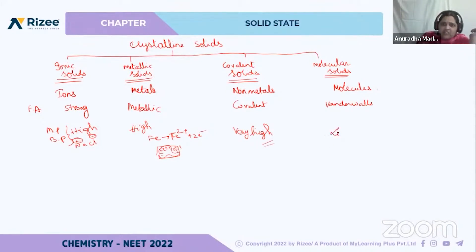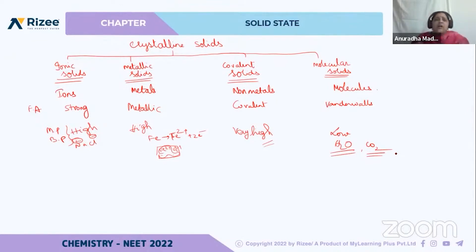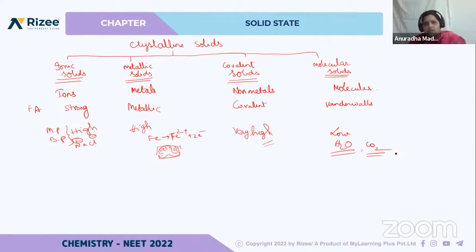For molecular solids, the melting point and boiling point is low. For example, water and CO₂ have low melting and boiling points. So to summarize, this is the classification of crystalline solids — divided into four types: ionic solids, metallic solids, covalent solids, and molecular solids.